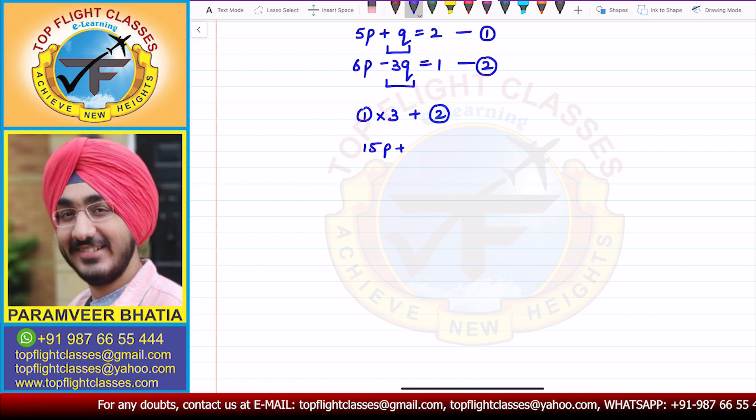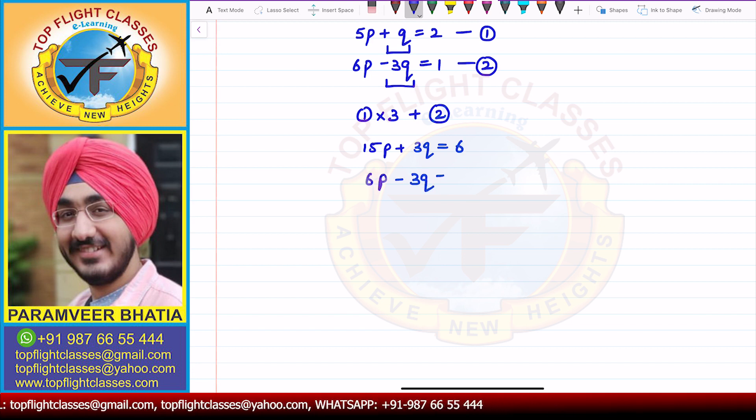We get 15p + 3q = 6 and from here I have 6p - 3q = 1. So 3q and -3q get cancelled. From here I will get 21p = 7, so from here I will get that p = 1/3.